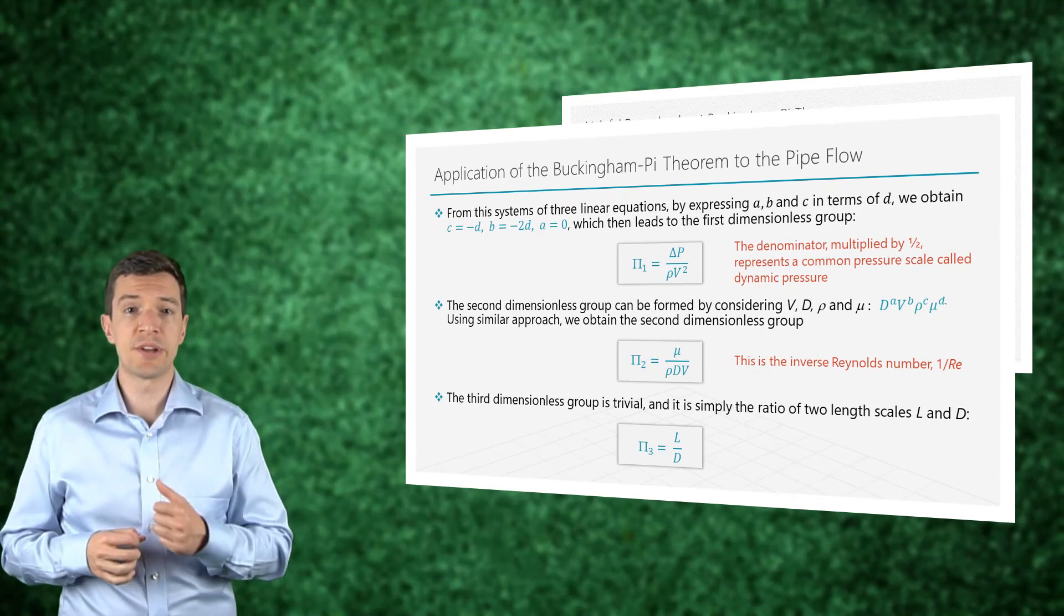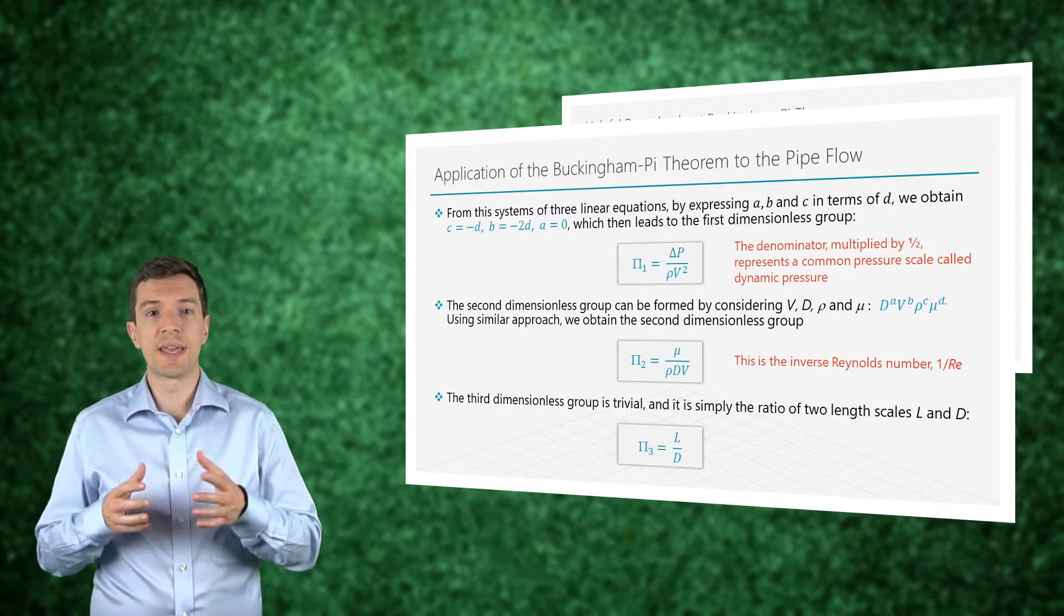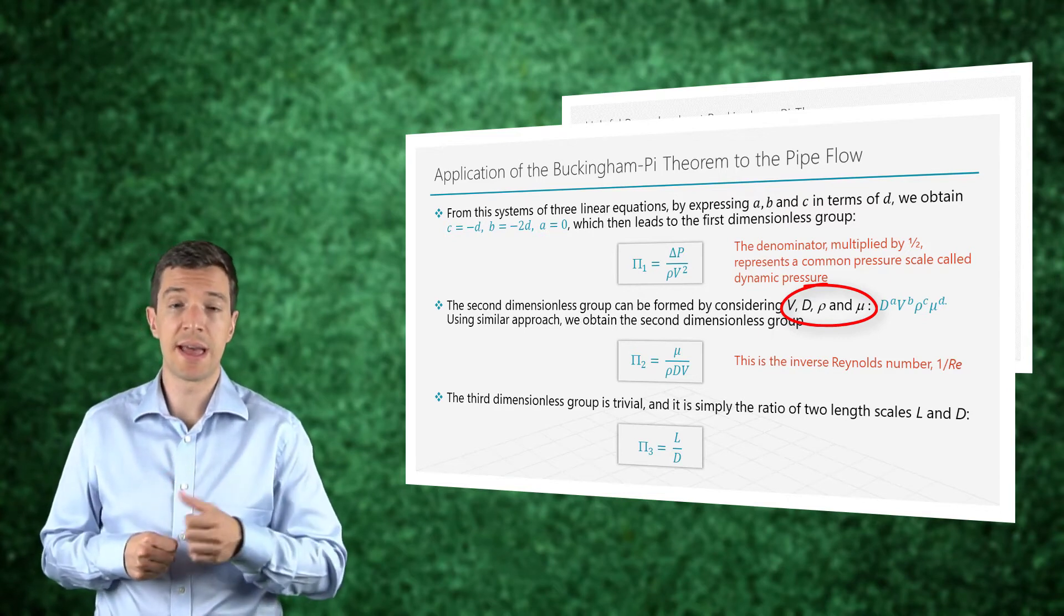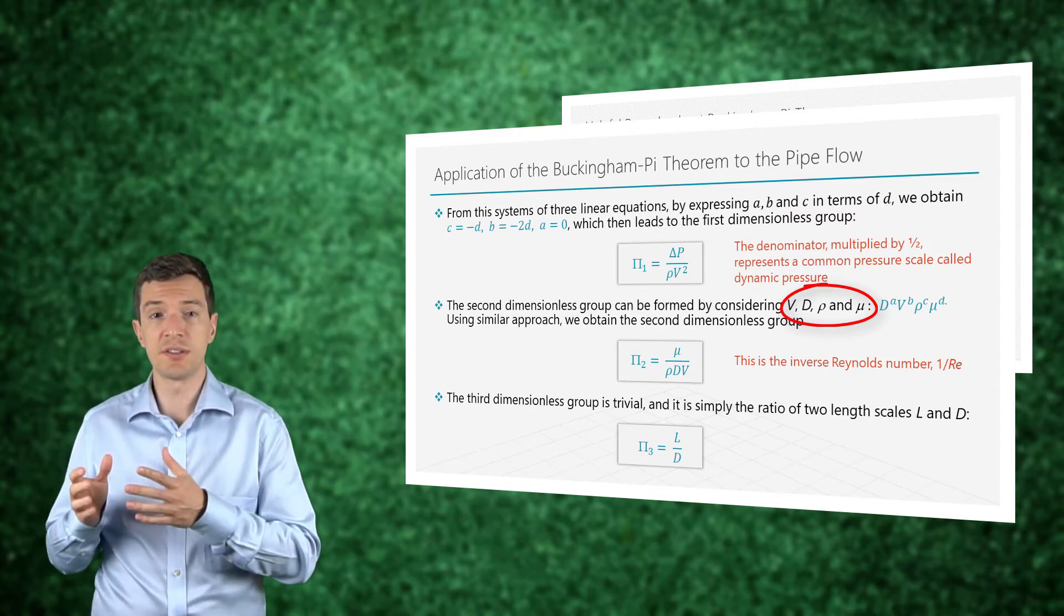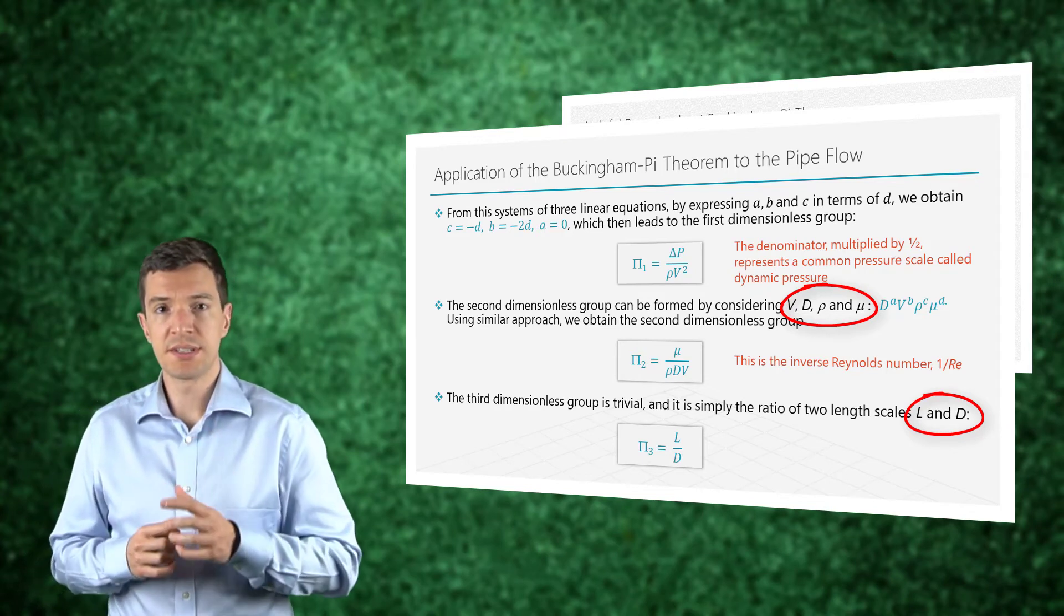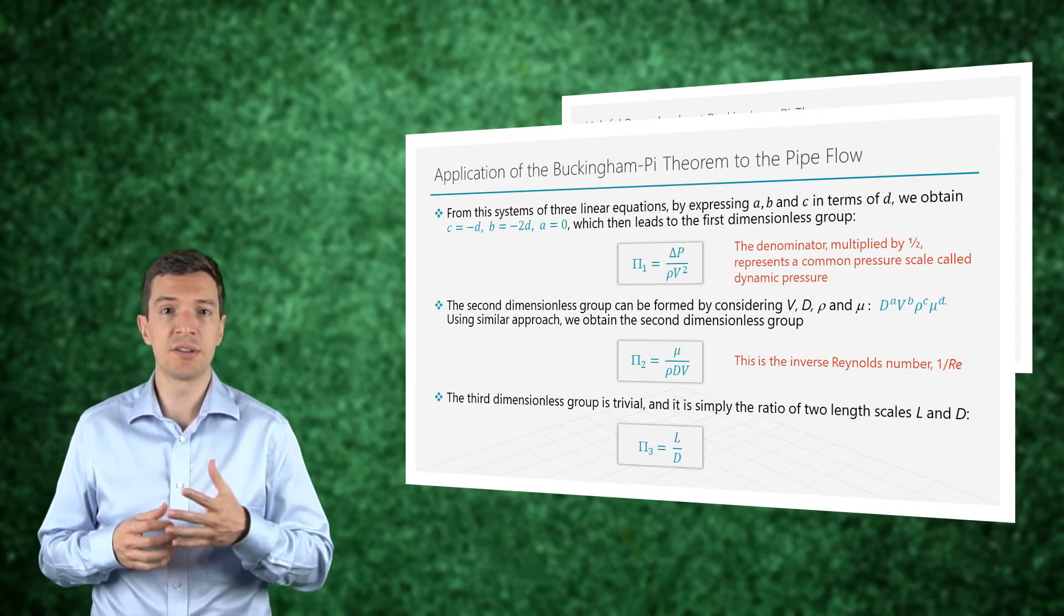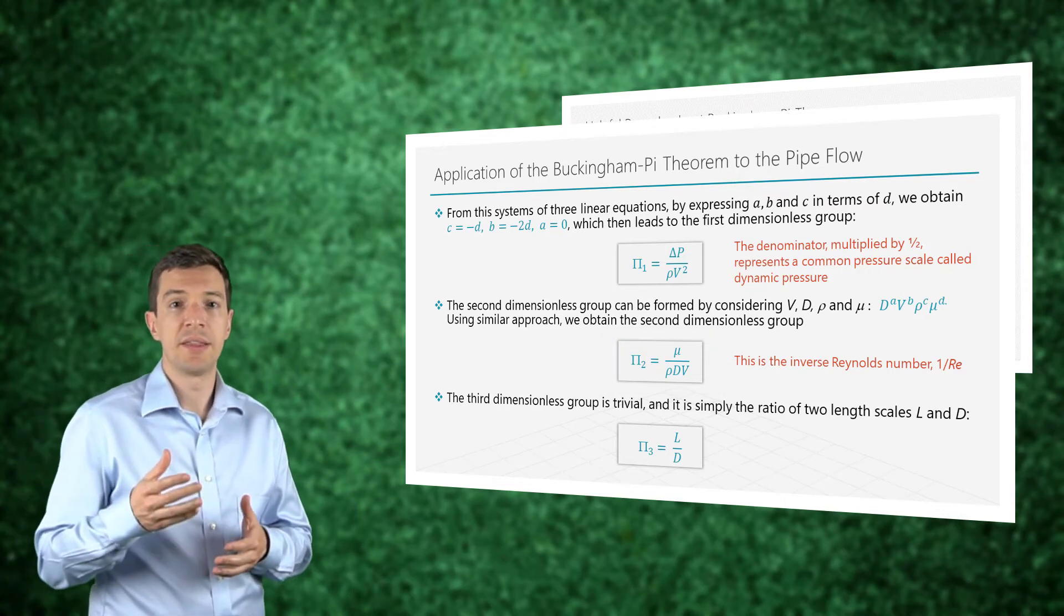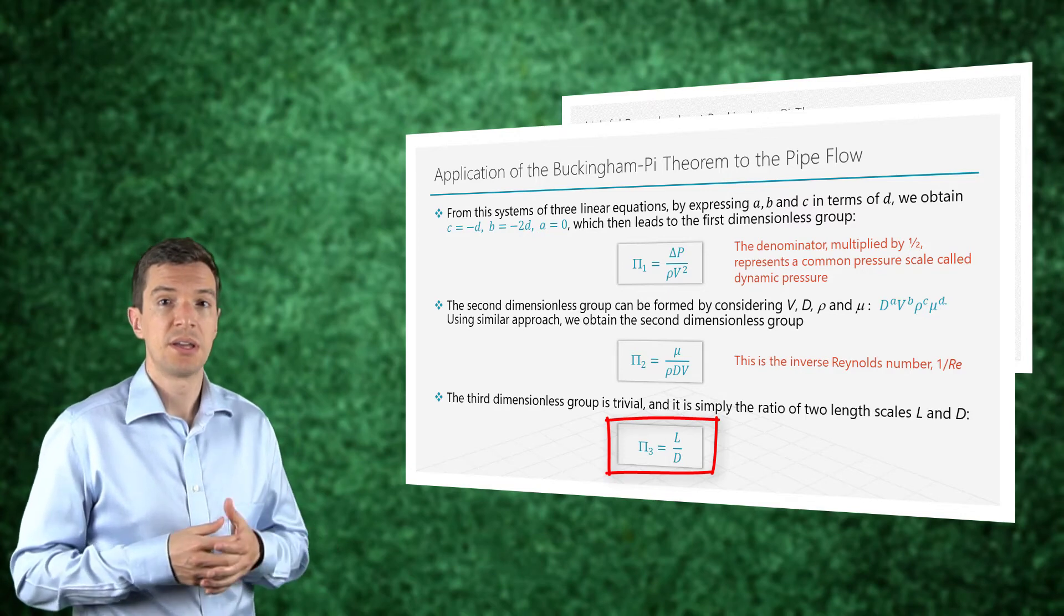The other two dimensionless groups can be found using the same approach. We keep the same three repeating quantities, diameter, velocity and density, and we change the last variable to the viscosity and to the pipe length. Using the same steps applied for the first dimensionless group, we can find that the second dimensionless group will be the inverse of the Reynolds number, and the third one will be a simple ratio between the length of the pipe and its diameter.